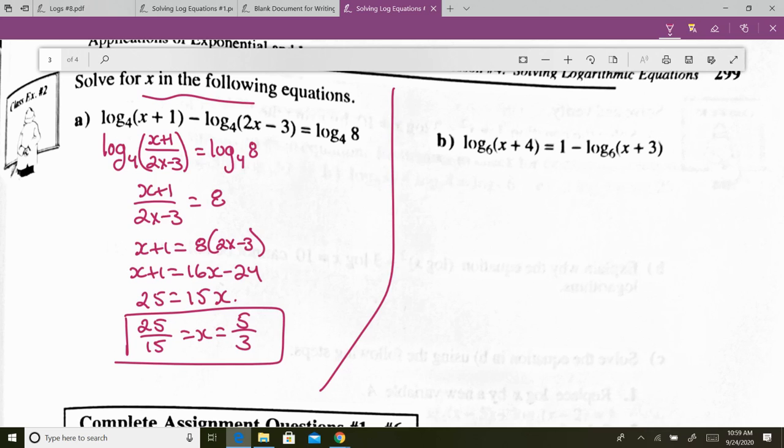So I'm going to get log 6 of x plus 4 plus log 6 of x plus 3 equals 1. All right, what now? What's the only thing you can do? Can't get rid of the logs yet, right? You have to make it a single log equaling a number. We have two logs. How do I make two logs into one log? Multiply the arguments.